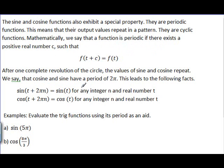And so the period of sine and cosine is 2π. So this leads to the following facts, that the sine of t plus 2πn is the same thing as the sine of t. So it doesn't matter how many multiples of 2π we add to the angle or to the real number, we get the sine of that original number.